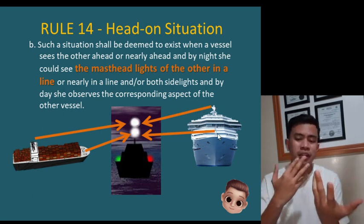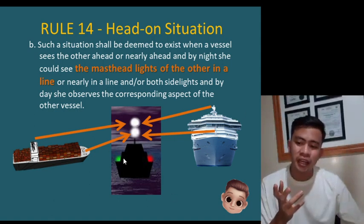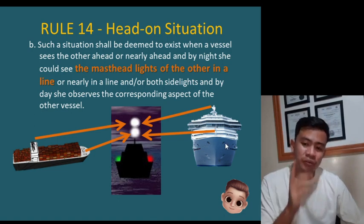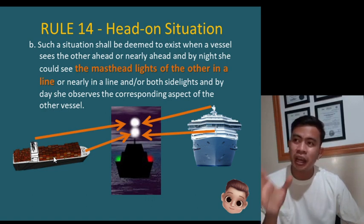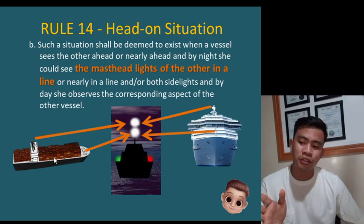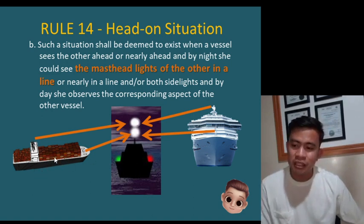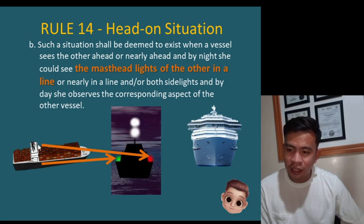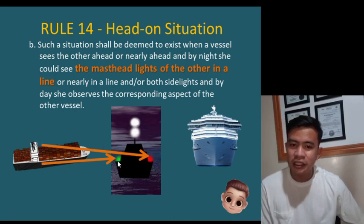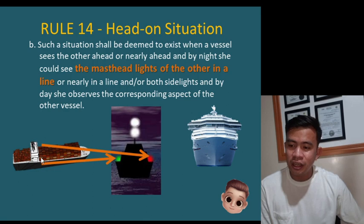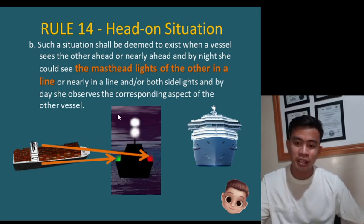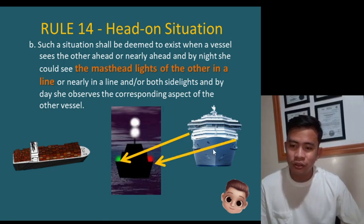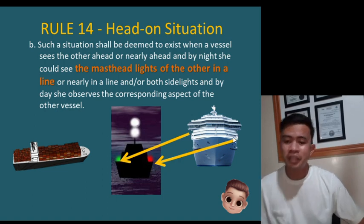Whenever a vessel is directly facing you, those are the lights she will show. During daytime, you observe the aspect of the vessel instead. If you see a vessel from the side — for example, the green light is visible and the red light is not — that is not a head-on situation. But when she is directly ahead, you see both sidelights, confirming the head-on aspect.